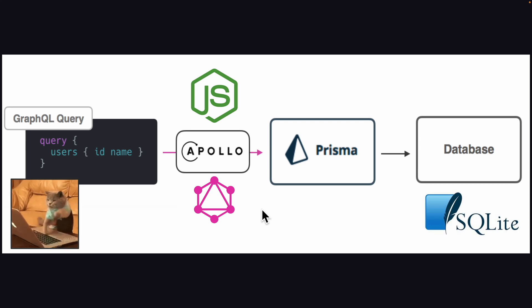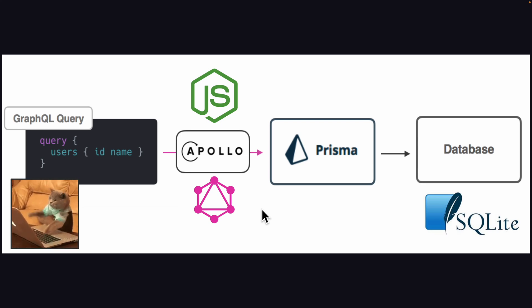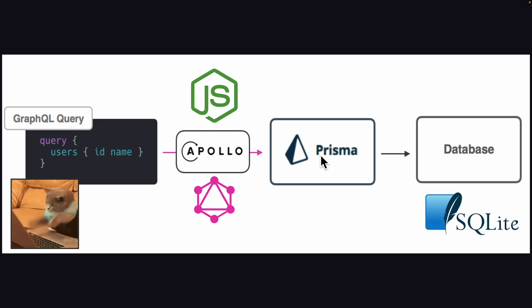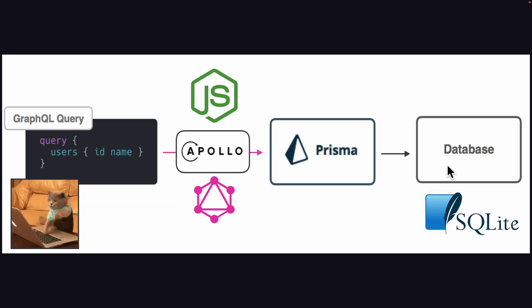In this video, we're going to take a look at how to build a simple GraphQL server using Node.js, GraphQL Apollo server, as well as Prisma to interact with our SQLite database.